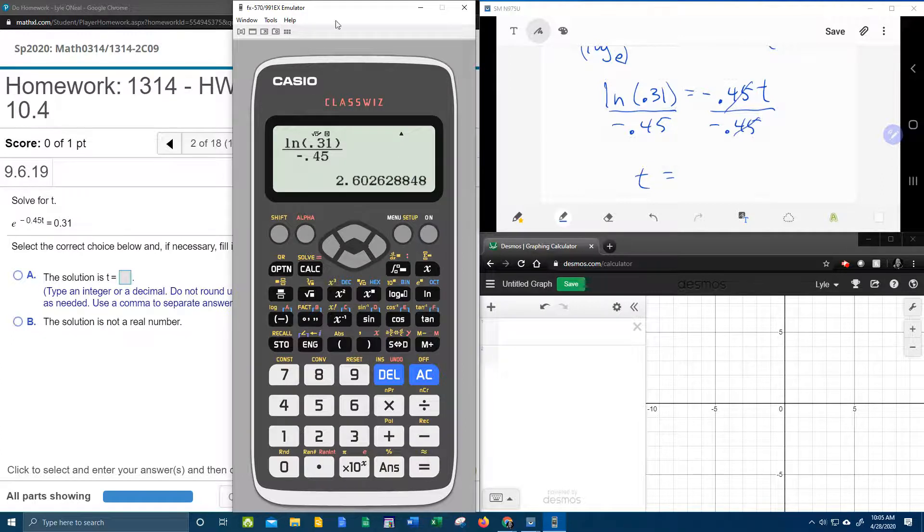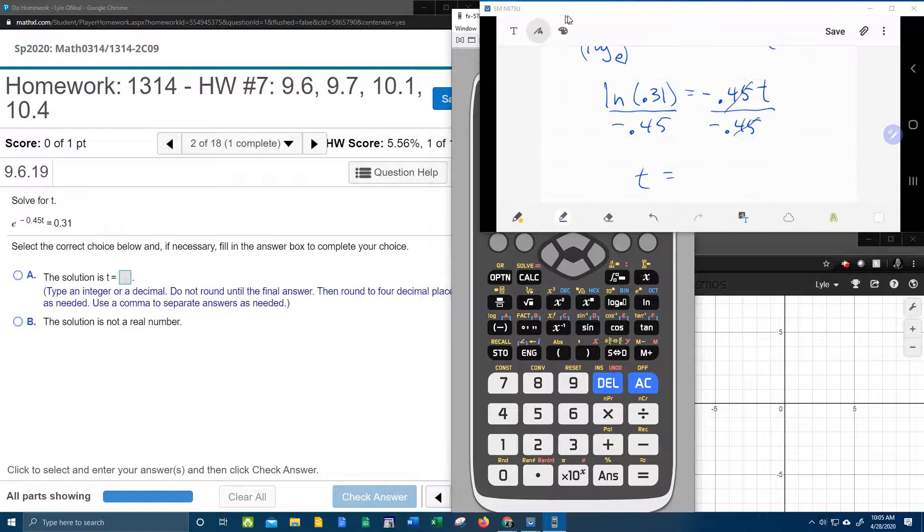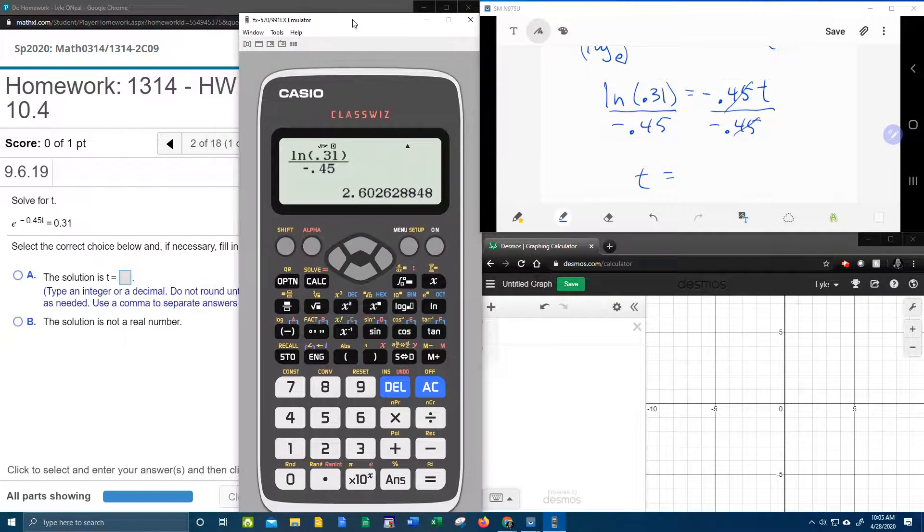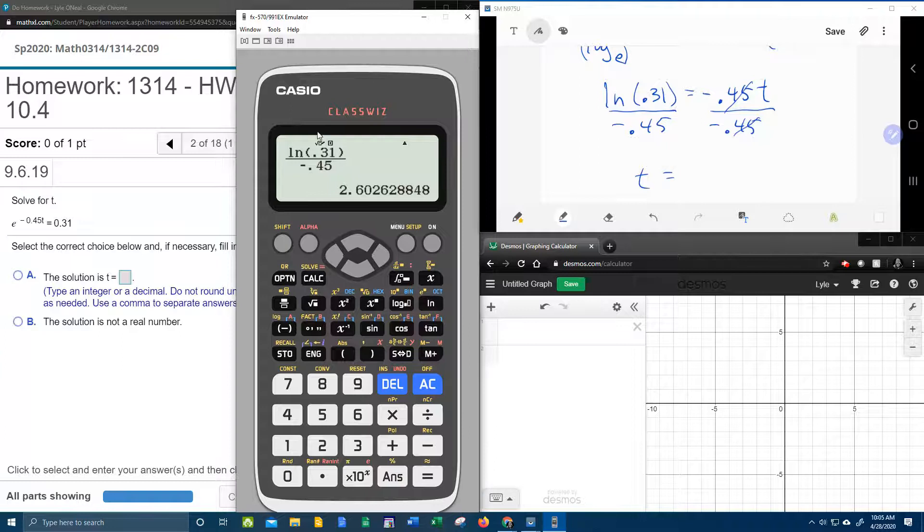And where do they want me to round to? It says round to four decimal places, okay? So we need to round to four decimal places. That's 2.6026, 2.6026 should be the correct answer, rounded to four decimal places.